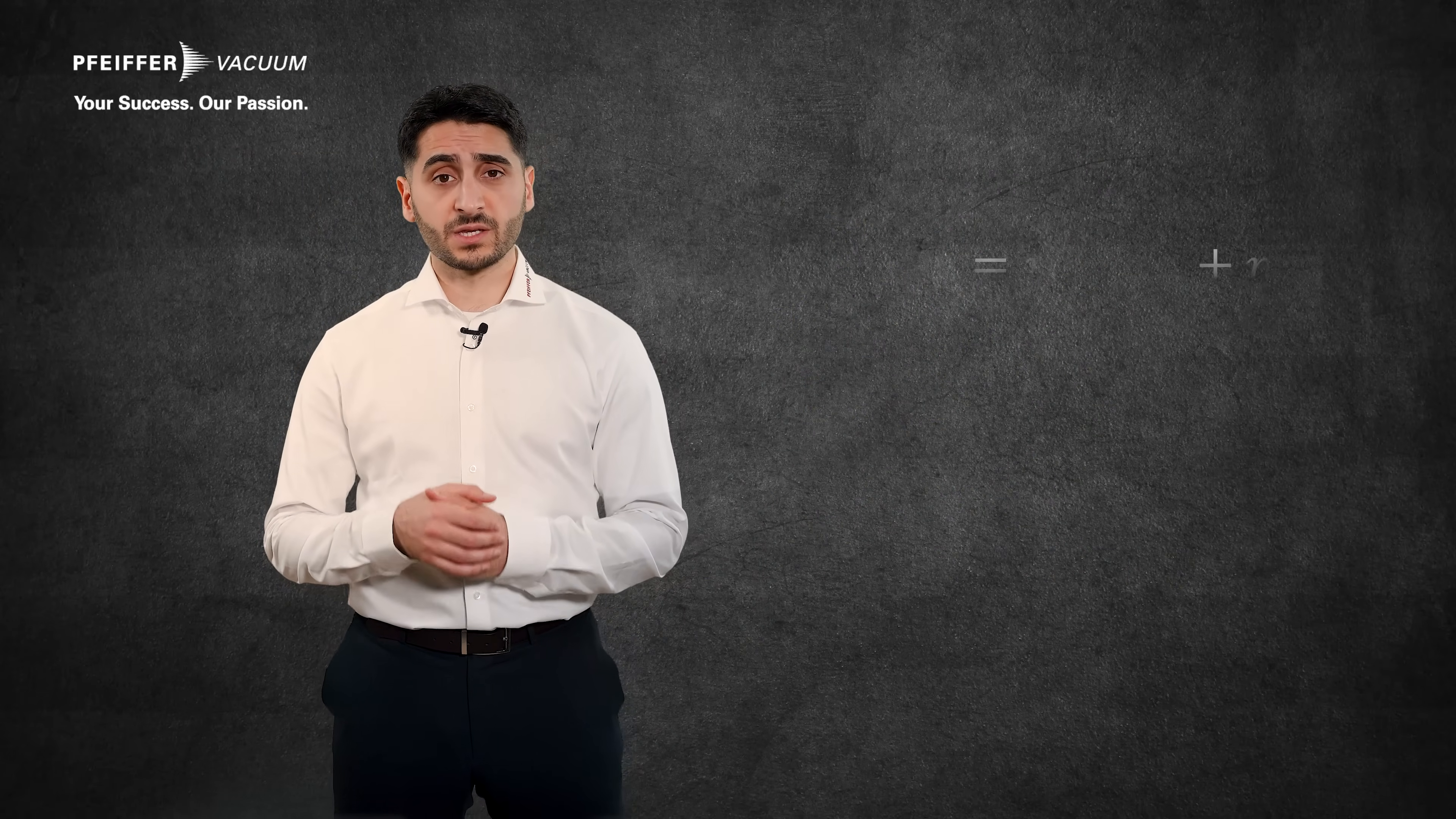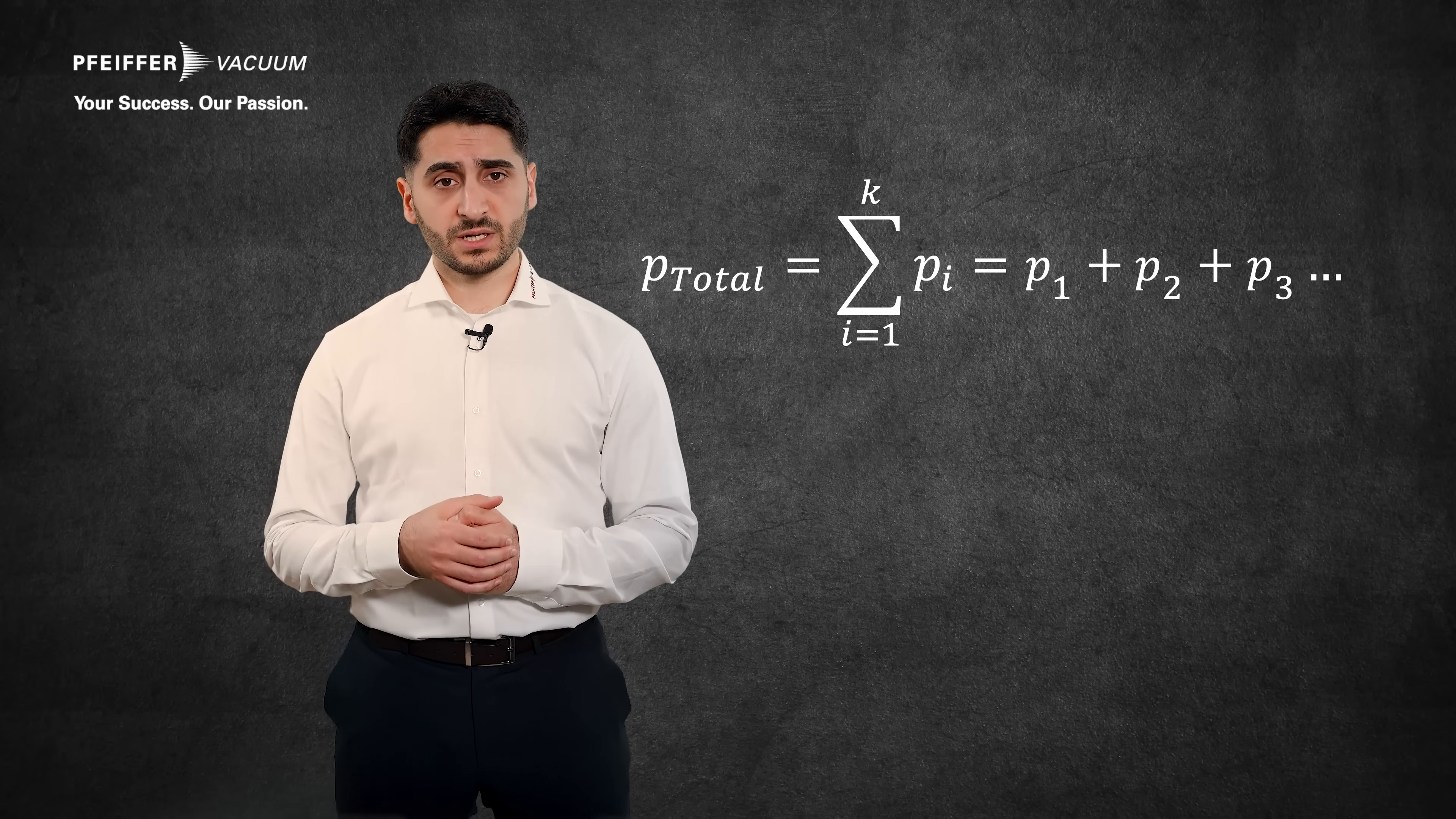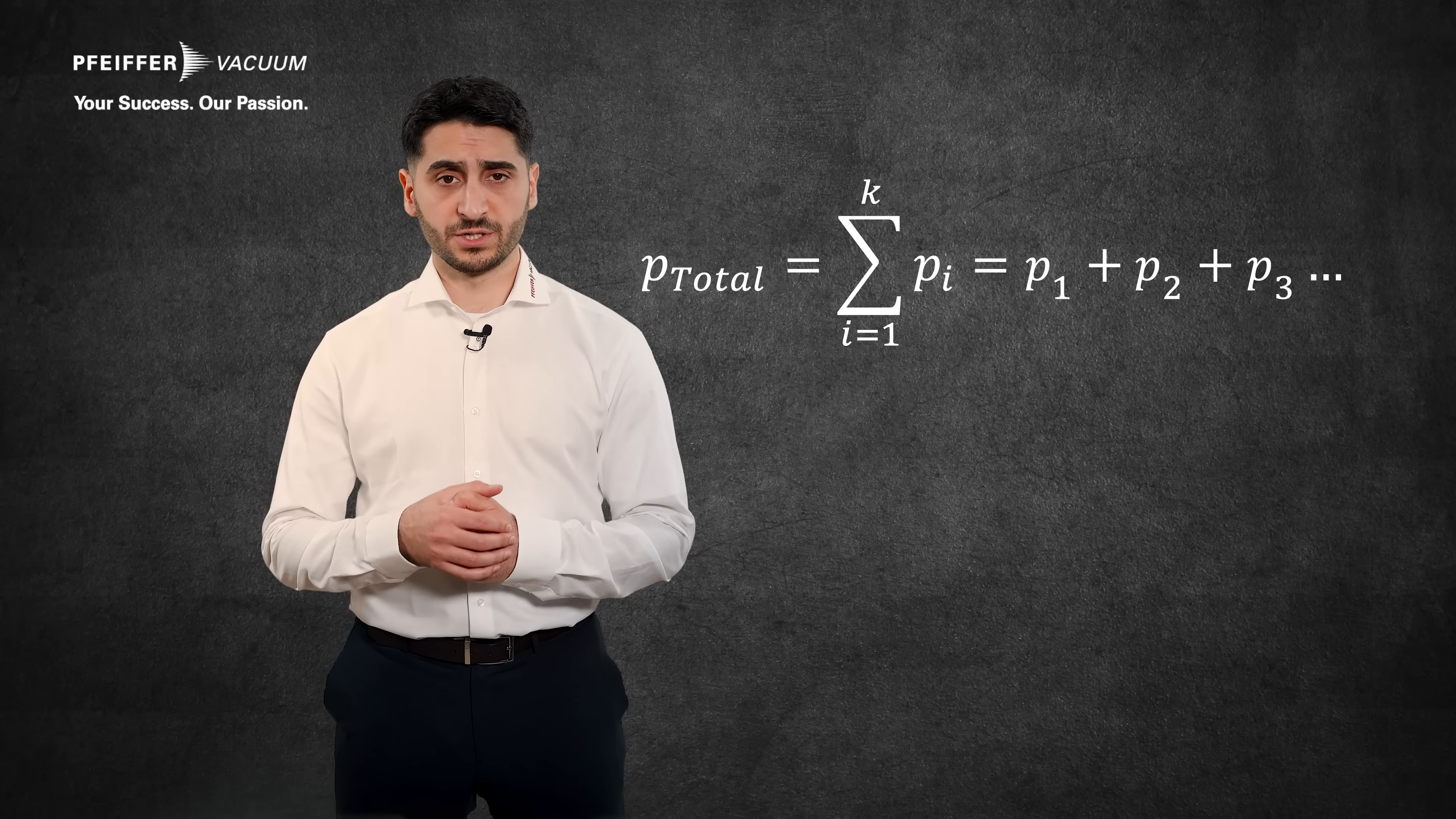Each individual gas component exerts a specific pressure that could be measured independently of the pressure of the other components. This component pressure is called partial pressure. The sum of all partial pressures is equal to the total pressure.